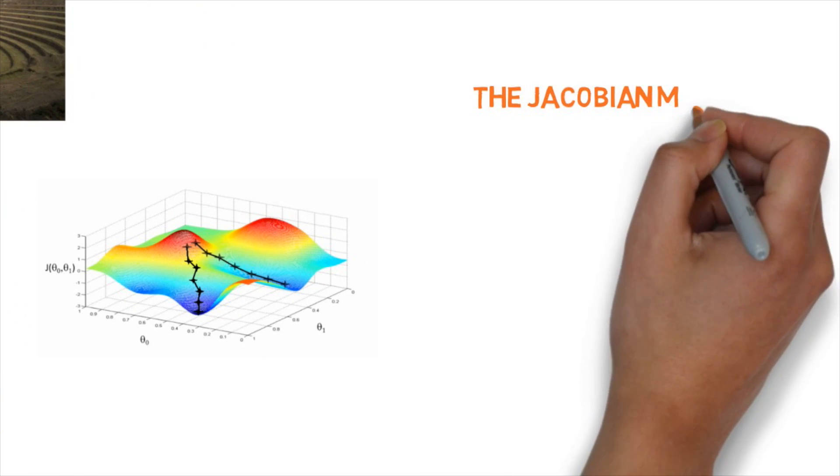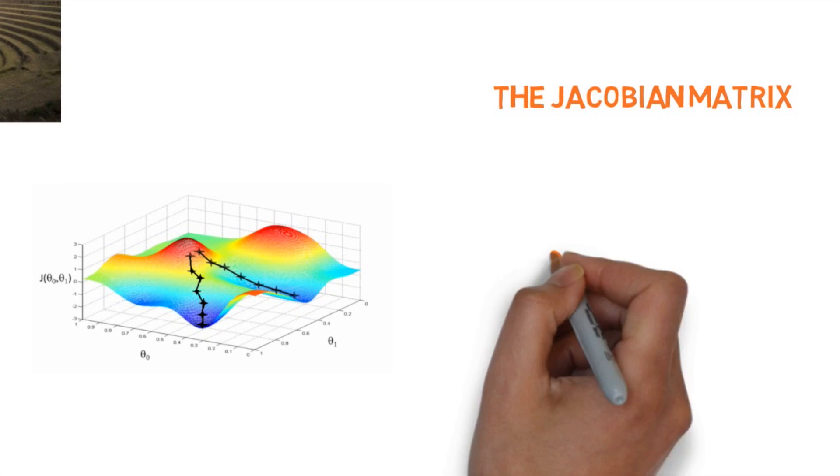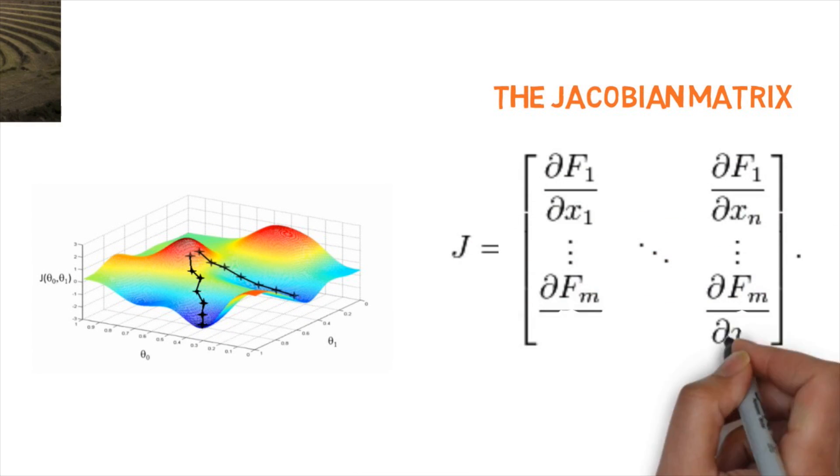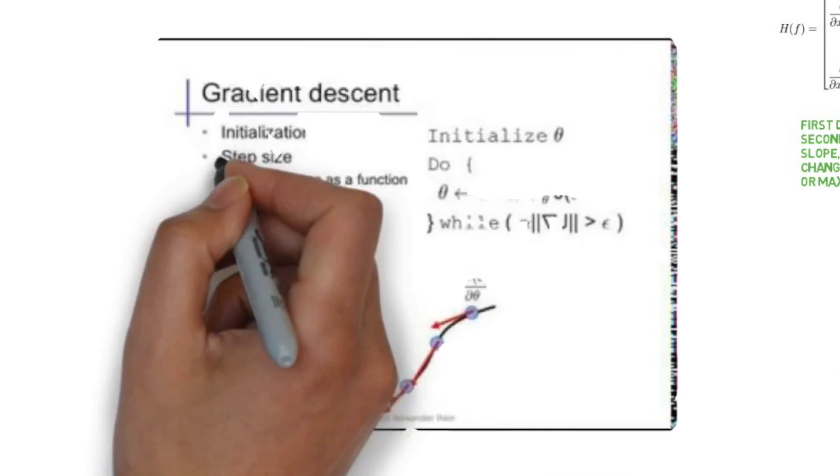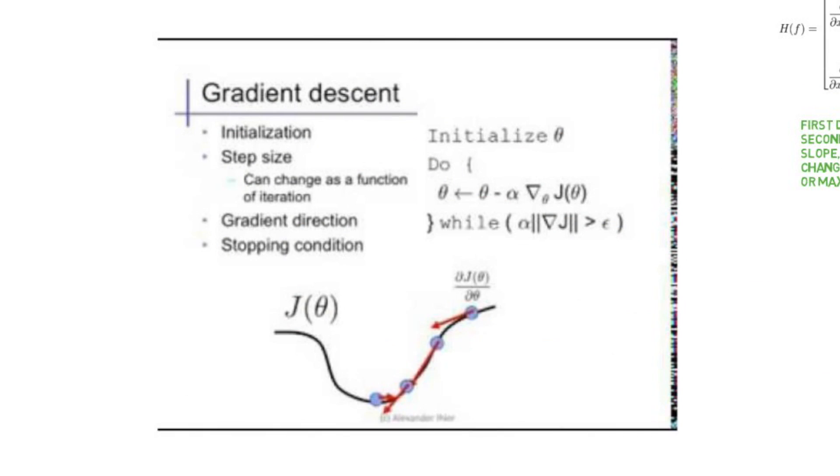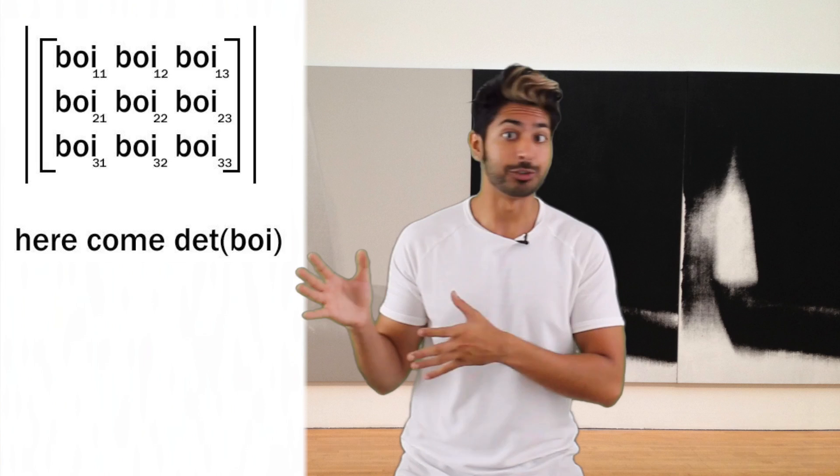The weights of our model are updated incrementally after each pass over the training dataset. Given an error function, like the sum of squared errors, we can compute the magnitude and direction of the weight update by taking a step in the opposite direction of the error gradient. This all comes from linear algebra.